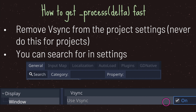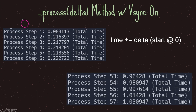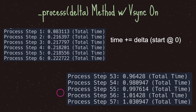With V-sync off, the Godot application will not limit the process virtual method — it will get called as fast as the CPU allows. With V-sync on, our process step gets called only 56 times to hit one second. That means the process virtual method gets called less times than the physics process virtual method, which guarantees to be called at least 60 times a second.